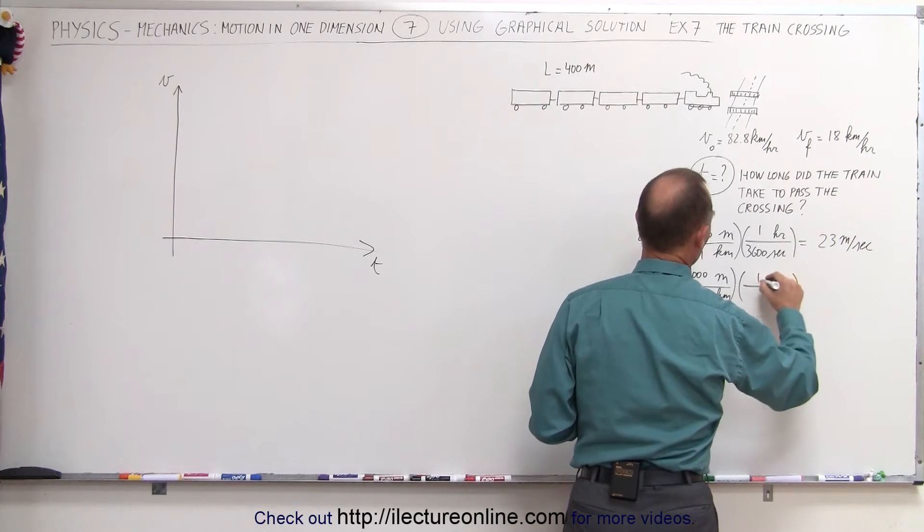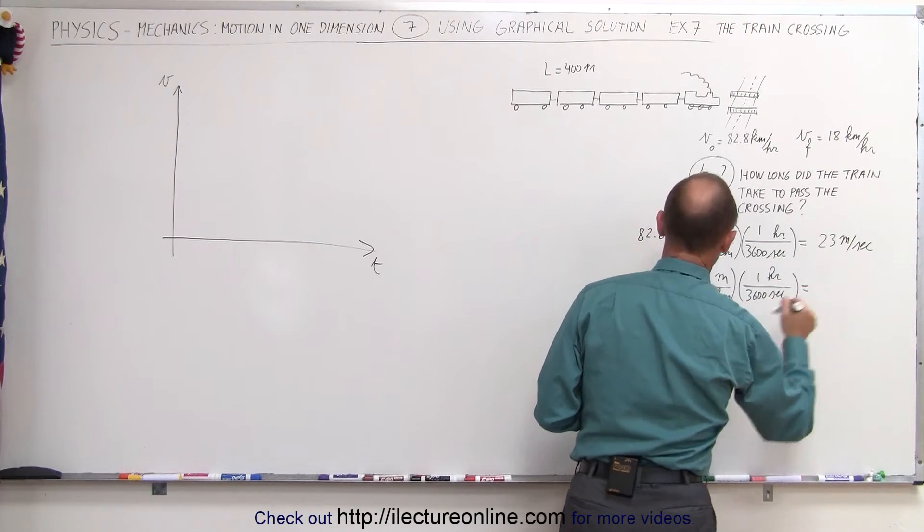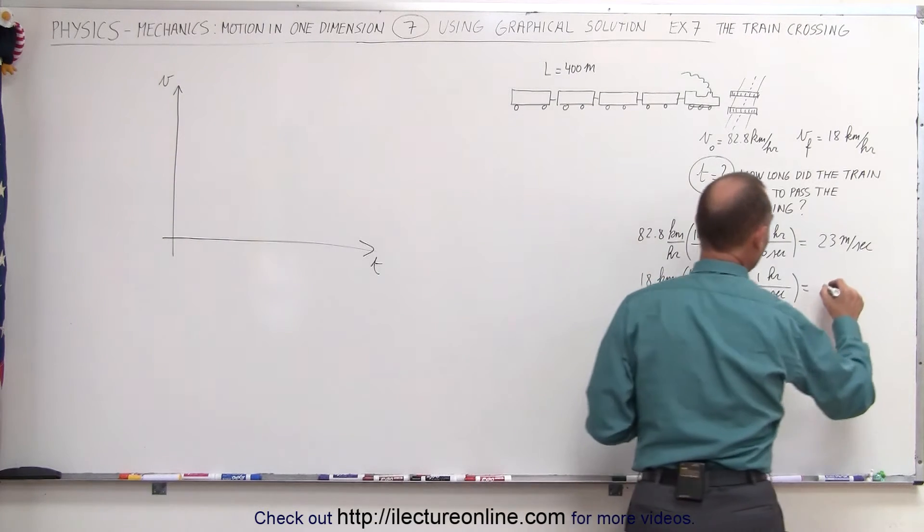And one hour is 3,600 seconds. So we take 18 divided by 3.6, and yes, that is 5 meters per second.